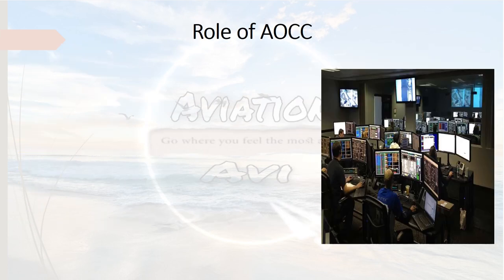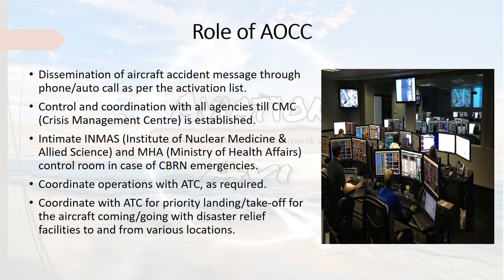Now let us understand the roles and responsibilities of the Airport Operations and Control Center (AOCC), the nerve center acting during any emergency. Their main roles include dissemination of the aircraft accident message through phone or auto-call as per the activation list, control and coordination with all agencies until the CMC is established, and intimation to special agencies based on the type of emergency — for example, in CBRN emergencies, INMAS and the Ministry of Health Affairs are informed. They also coordinate with ATC as required and coordinate for priority landing and takeoff of aircraft carrying disaster relief.